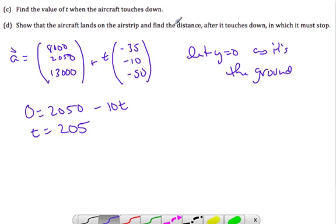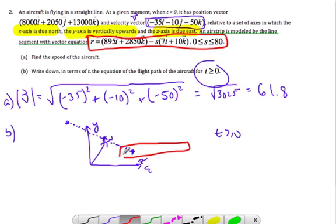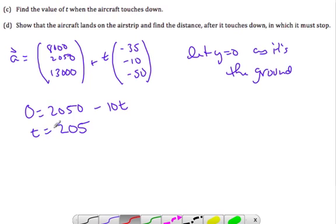Now it says show that the aircraft lands on the airstrip and find the distance after it touches down. Well, if this aircraft is going to land on the airstrip, if my aircraft is going to land on here, this point here where it touches the ground has to be on this line. So we have to go find the point. We know when t touches, when it touches the ground, we find the actual coordinate of this equation and then we see if it is on the airstrip.